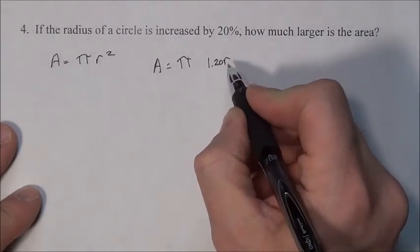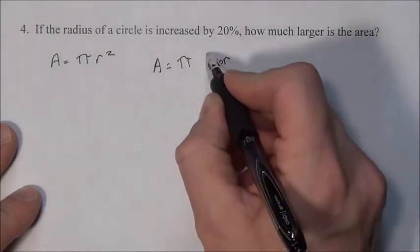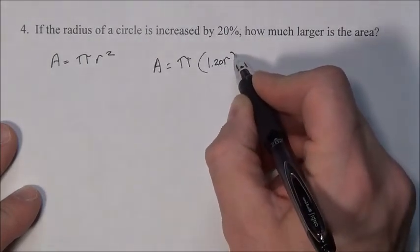You're taking that radius—if it's 5, you multiply it by 1.2, it'll be 6. You take the radius and multiply by 1.2.